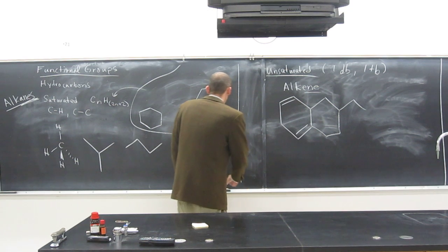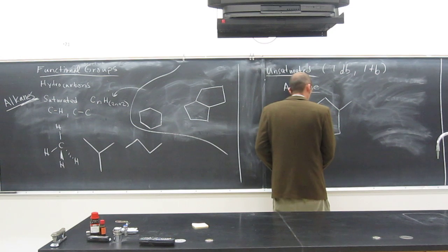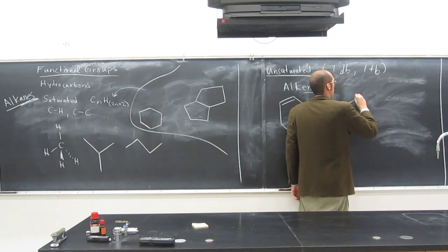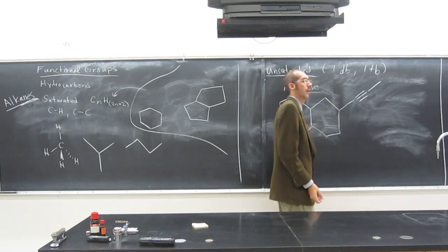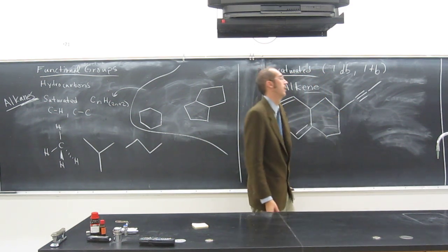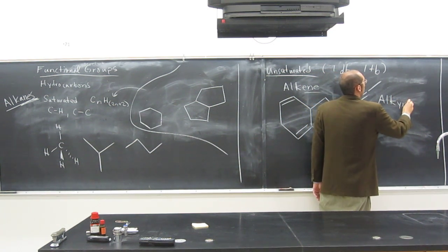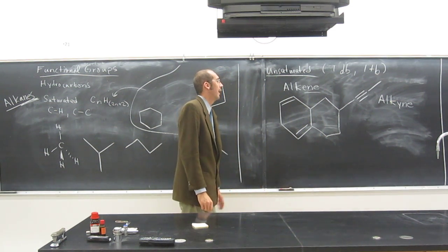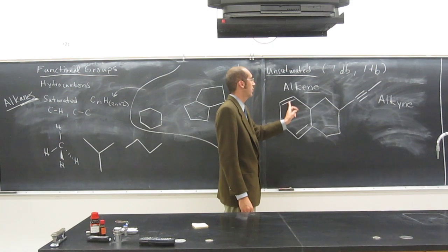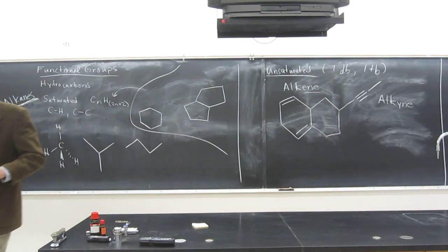A molecule can have a triple bond and be unsaturated, like so. If you've got a triple bond in you, you're now called an alkyne. In fact, it's the functional group. A functional group is essentially any sort of structure that's within an organic molecule.